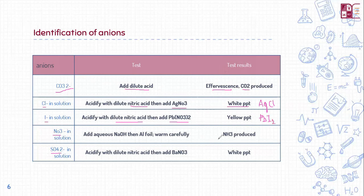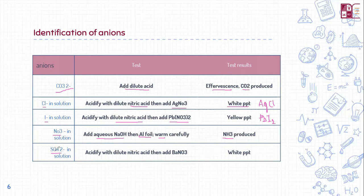For nitrate in solution, you add aqueous sodium hydroxide and then a bit of aluminum foil, and you have to warm the mixture — ammonia gas will be produced. For sulfide, you acidify with nitric acid and add barium nitrate, which forms white precipitates of barium sulfate. You need to remember these tests, and revising these tables again and again will be very effective for memorization.